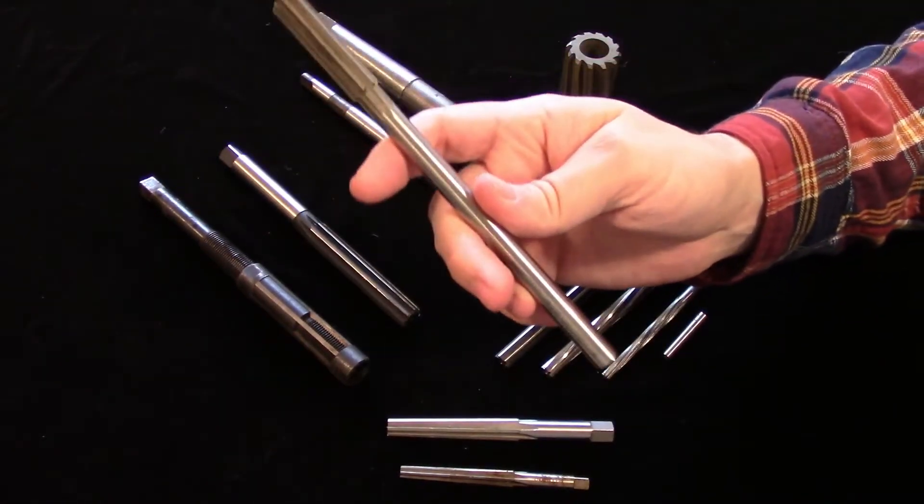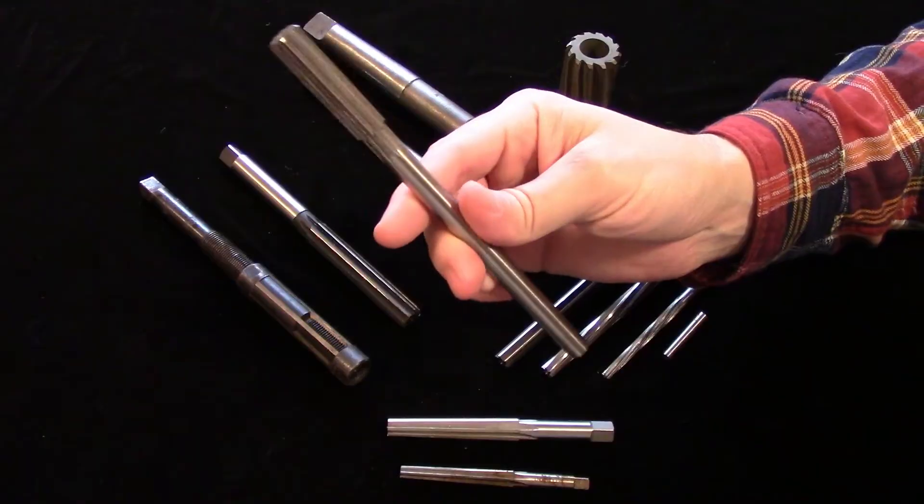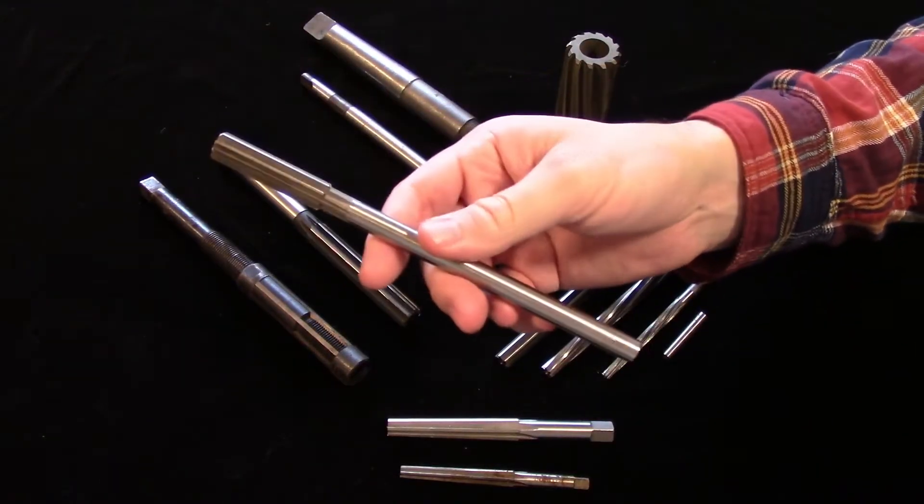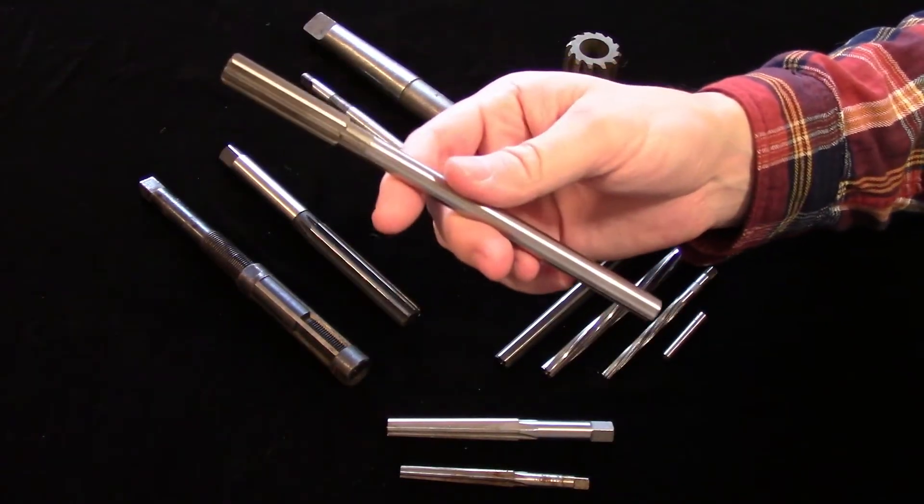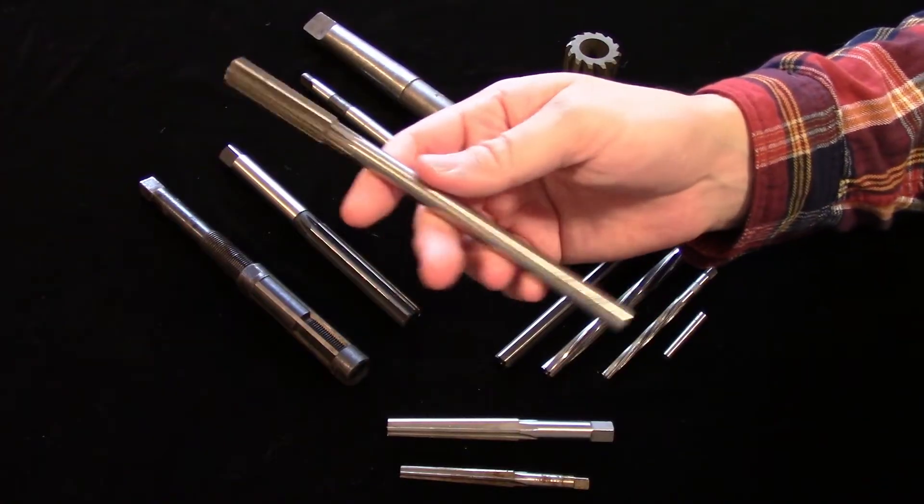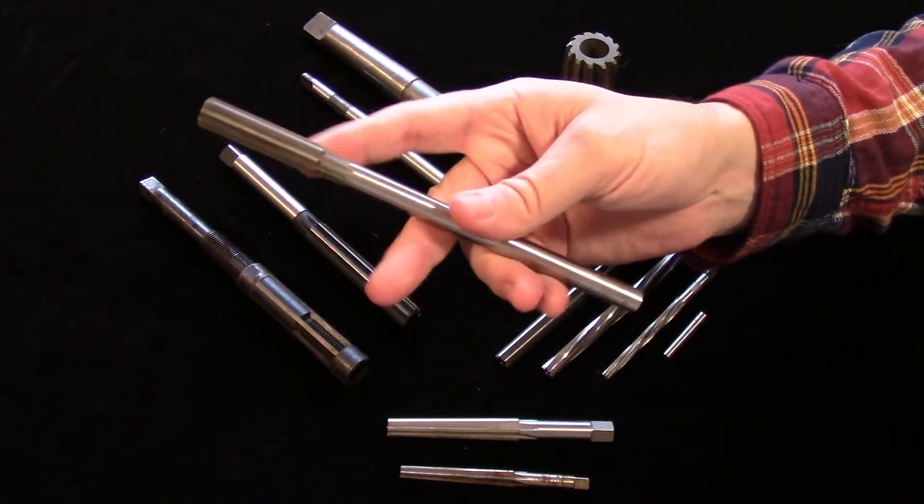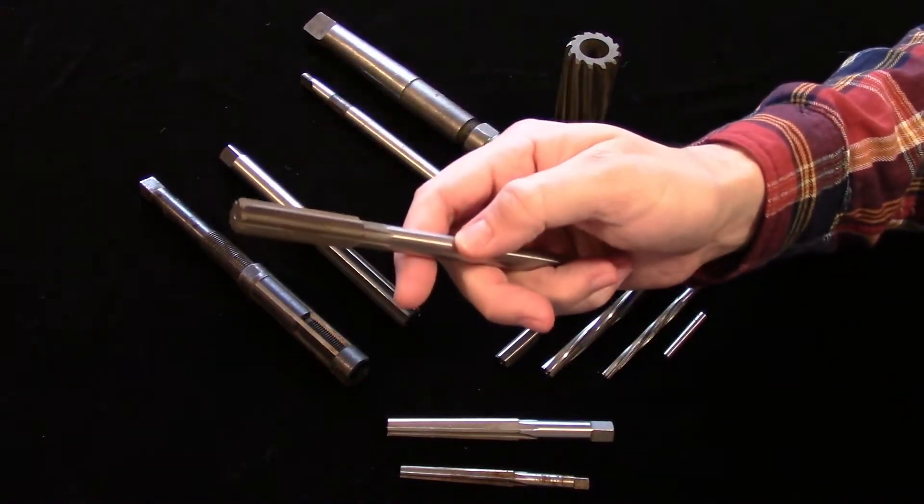Reamers are a fast and relatively inexpensive way to cut a precise diameter on a hole. They are available in almost any size. Most industrial suppliers sell them in thousandth of an inch and hundredth of a millimeter increments so you can get just the fit you need.